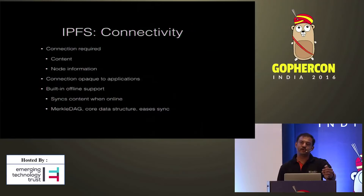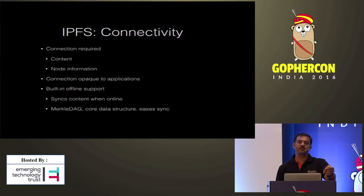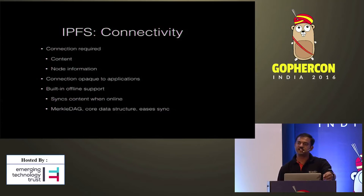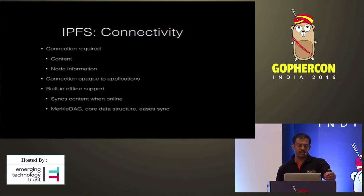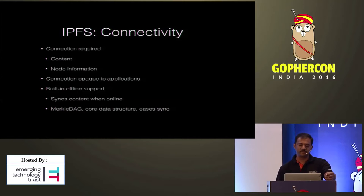In IPFS, your node communicates with other nodes only to retrieve content, or to retrieve information about other nodes within the network. Even these connections are opaque to the applications, though applications can work on any data as long as the content is available on the local storage. This provides built-in support for offline functionality, and whenever the user comes online, changes are synced with other nodes. There is a data structure called MerkleDAG, which is a core part of IPFS that simplifies the syncing process.